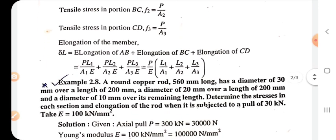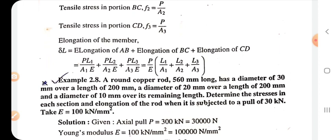Elongation of AB, elongation of BC, and elongation of CD - add them together. We know the formula: delta L = PL/AE. We proved this formula in our class. So elongation equals PL1/A1E.